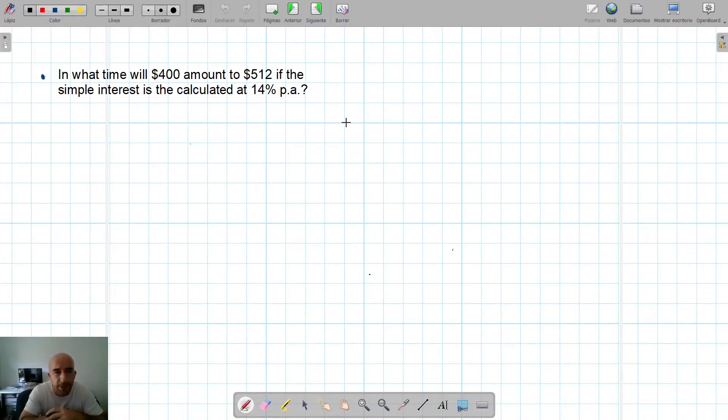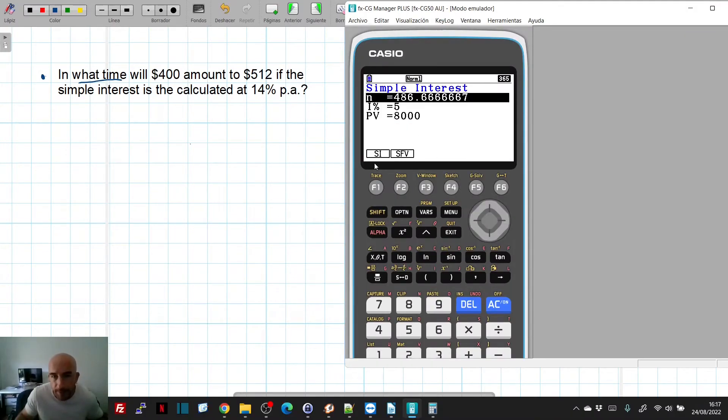So now we are asked in what time will $500 amount to 512 if the simple interest is calculated at 14% per annum. So now, what information do we have? We have principal value, final value, and the interest, which is 14. What are we asked for? N. Can the calculator give us N? No. It can only give us SI and SFV. So we can't do it in the calculator.